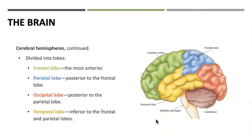For the lobes of the cerebrum: our frontal lobe is the most anterior. In this region we have higher cognitive functions like thinking, planning, and problem solving, as well as short-term memory storage. We can also control movement here — there are motor areas in the frontal lobe — and it is the area responsible for personality and emotions.